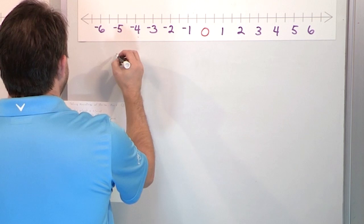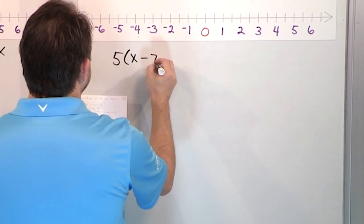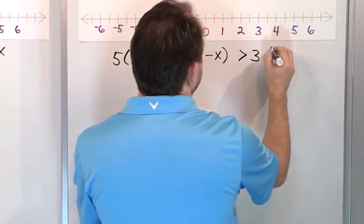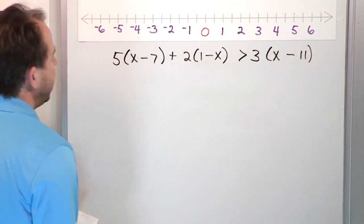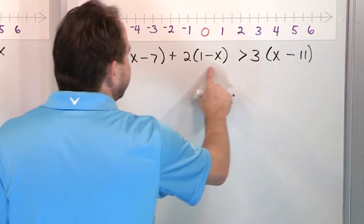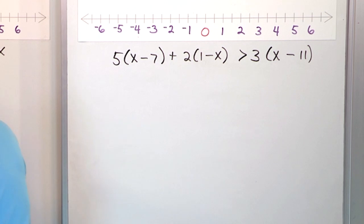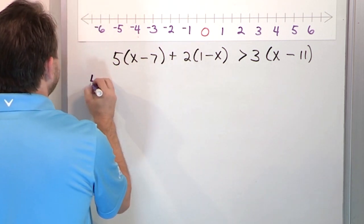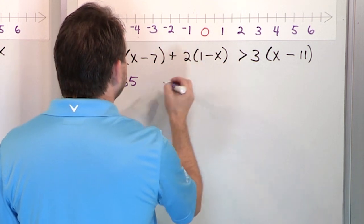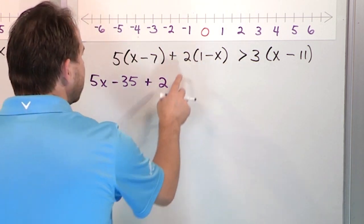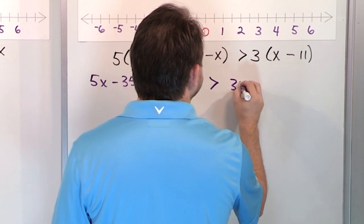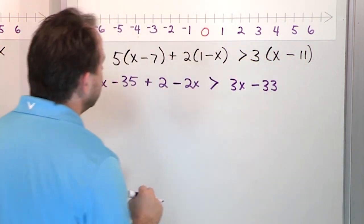Next problem: what if we have 5(x minus 7) plus 2(1 minus x) greater than 3(x minus 11)? Same sort of thing — we can't simplify until we do all the distribution. So: 5 times x is 5x, 5 times negative 7 is negative 35. Plus 2 times 1 is 2. Then 2 times negative x is negative 2x. Then we have a greater than sign, 3 times x is 3x, and 3 times negative 11 is negative 33.